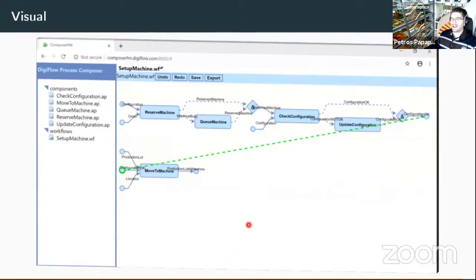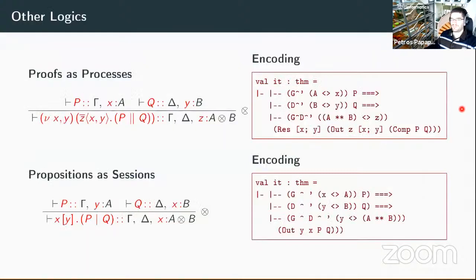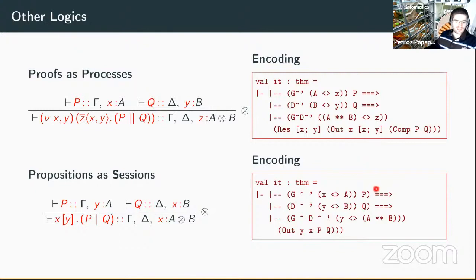We also have a visual interface that connects into HOL Light, triggers the proof, and brings the results back visually so that people don't need to know how to do theorem proving to use our system. We've also implemented other logics — here is part of the classical linear logic rules in proofs-as-processes with the pi calculus correspondence, and we have the same for Propositions as Sessions from Wadler's paper using the CP session calculus. If I change the turnstile symbol, we can have both at the same time, do the same proofs, and reuse all the proof automation built for one automatically for the other.